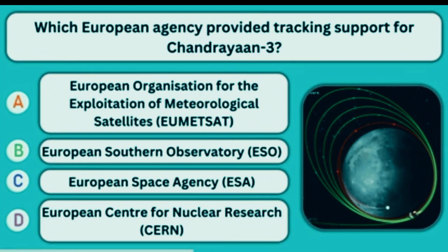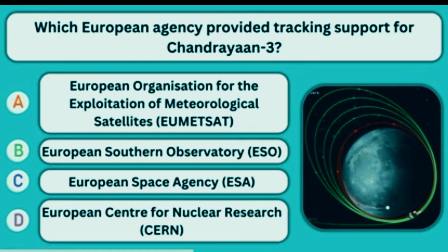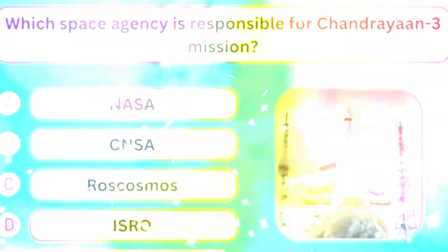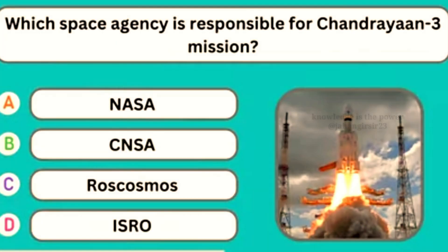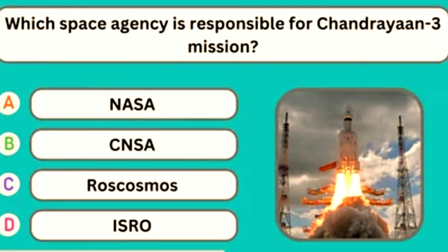Which European agency provided tracking support for Chandrayaan-3? Option C — European Space Agency. Which space agency is responsible for the Chandrayaan-3 mission? Option D — ISRO.